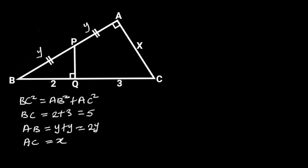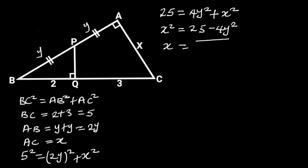Substituting these values in the equation will give us 5 squared is equal to 2Y squared plus X squared. 5 squared is 25, and 2Y squared is 4Y squared. If we make X squared the subject of the formula, we will have X squared is equal to 25 minus 4Y squared. Taking the square root of both sides will give us X is equal to the square root of 25 minus 4Y squared. Let's call this equation 1.